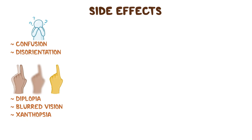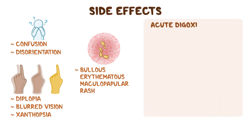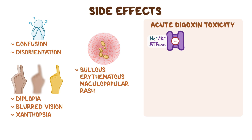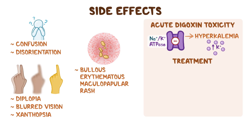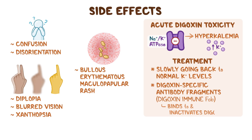Some clients may also develop a bullous, erythematous, maculopapular rash. Finally, in acute digoxin toxicity, too many sodium-potassium ATPases are inhibited at the same time, which can result dangerously in hyperkalemia. Treatment involves slowly going back to normal potassium levels, as well as administration of digoxin-specific antibody fragments or digoxin-immune FAB, which binds to and inactivates digoxin.